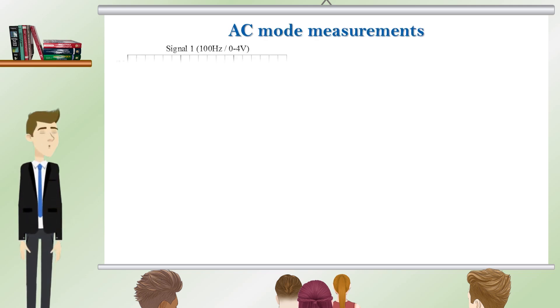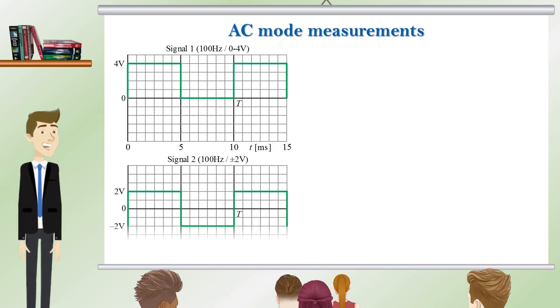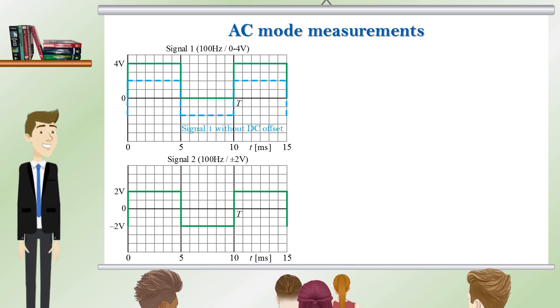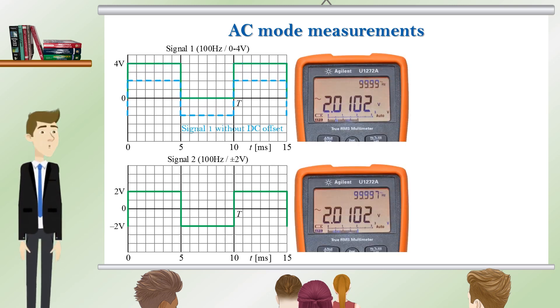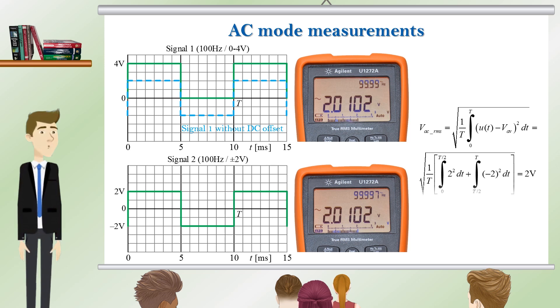In AC mode the multimeter measures the RMS value of the applied signal after removing the DC component. As a result the reading is the same for signal 1 and signal 2. The RMS value is set according to the formula.